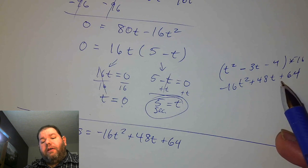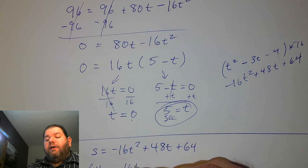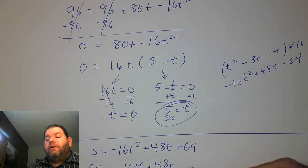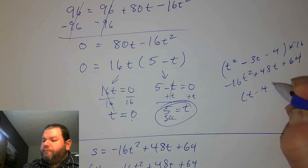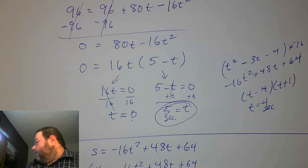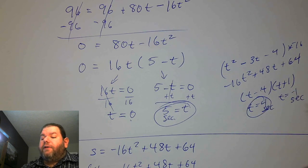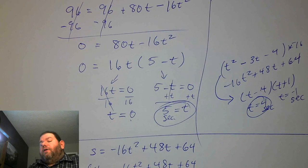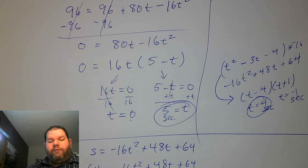We want the positive solution to see how much time passes for the ball to hit the ground. Working it through, you find it takes 4 seconds to hit the ground — not negative 1 seconds. For the ball to cross the top of the building again, we'd set the equation equal to 64: 64 equals negative 16t squared plus 48t plus 64.